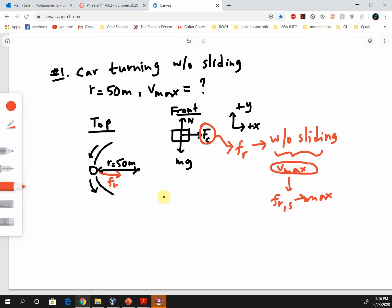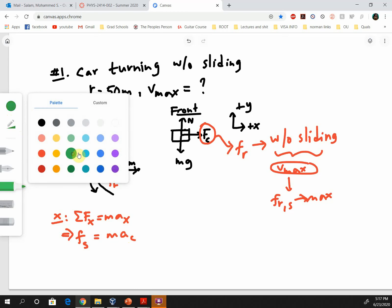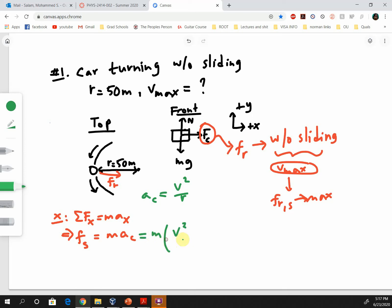Now let's write down our Newton's second law equations. In the x direction, summation of Fx equals m times ax. In the x direction we have only one force - static friction - and the acceleration is ac. So we write Fs equals mass times ac. We also know that ac, the centripetal acceleration, has magnitude given by v squared over r, where v is the speed of the object that is turning and r is the turning radius. This becomes mass times v squared over r. Let's call this equation 1.